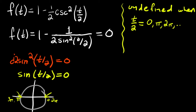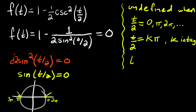Also we have negative pi, negative 2 pi, so in general: t over 2 equals k times pi, where k is an integer — meaning positive or negative. That means t would have to equal 2k pi, where k is an integer.